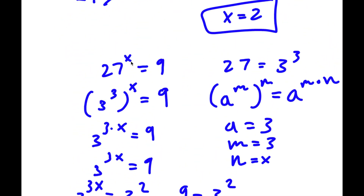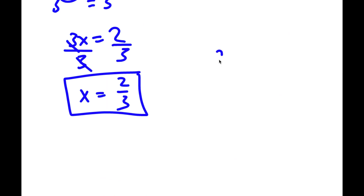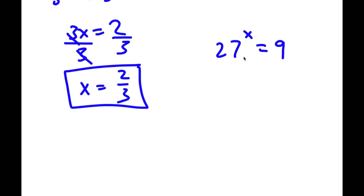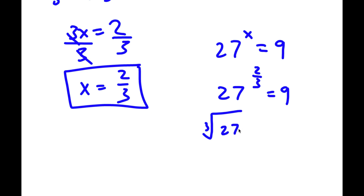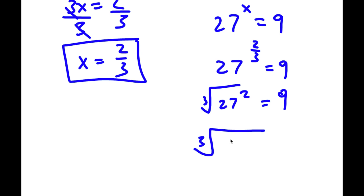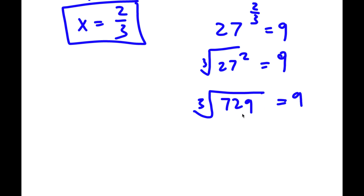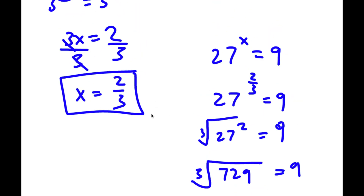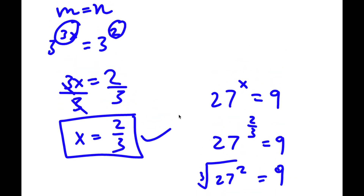Now to check, I'll plug in x equals 2 over 3 into the equation 27 to the power of x equals 9. So I have 27 to the power of 2 over 3 is equal to 9. Now 27 to the power of 2 over 3 is the same thing as the cube root of 27 squared. 27 squared equals 729, and the cube root of 729 is 9. So 9 equals 9, confirming that x equals 2 over 3 is correct.